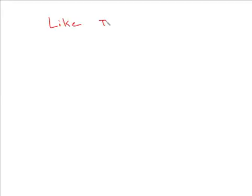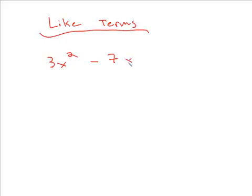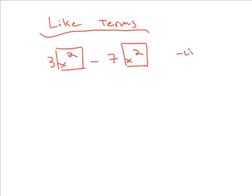First of all, let's talk about like terms. Let's say you have something like 3x squared minus 7x squared. It's okay to subtract these because they're like terms — this part tells you that these terms are alike. So basically you do 3 minus 7, that gives you negative 4x squared.